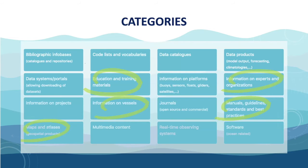We have 16 different categories. The ones highlighted are the ones taken for OceanInfoHub as the ones we will build pilots upon — that will be explained by Lucy Scott later on. The categories include people, documentation, vessels, maps, and training opportunities. Lucy will explain those later.